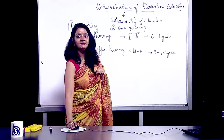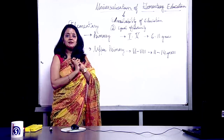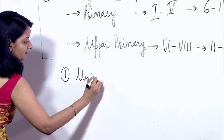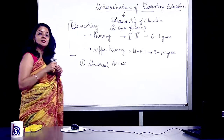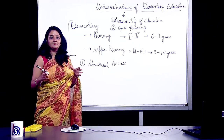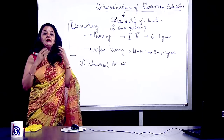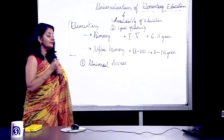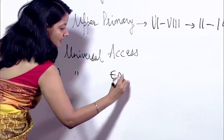We can justify this by saying that universalization of elementary education has four things. The first one is universal access. Universal access means that every child gets the benefit of education and can easily access it wherever it is available. Whether he is staying in a remote area of Bihar or some remote area of Jammu and Kashmir, he has a school and is able to get education. Nobody can deny him education.